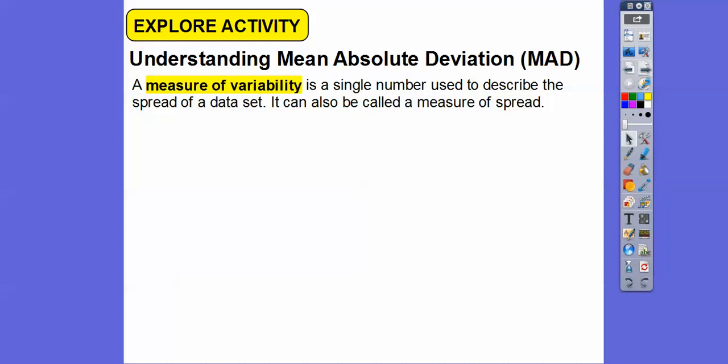Understanding the Mean Absolute Deviation. The measure of variability talks about, if you have a set of data, how much do the numbers vary? Are they very closely together with each other? The measure of variability would be smaller. If your measure of variability is a large number, then the numbers are very, very large.